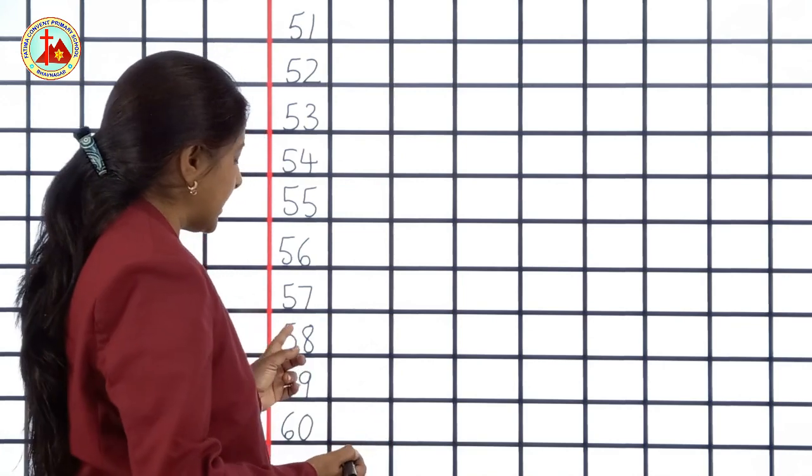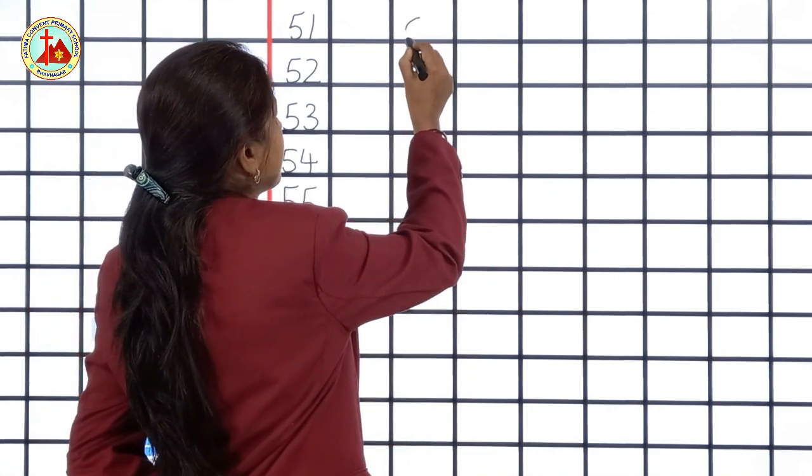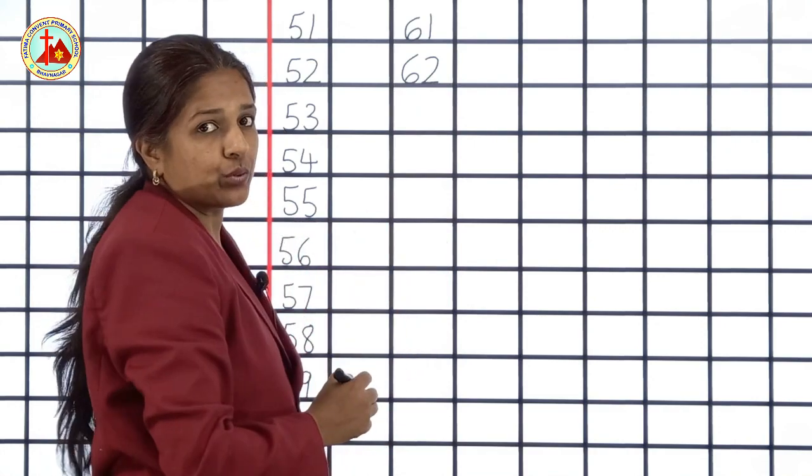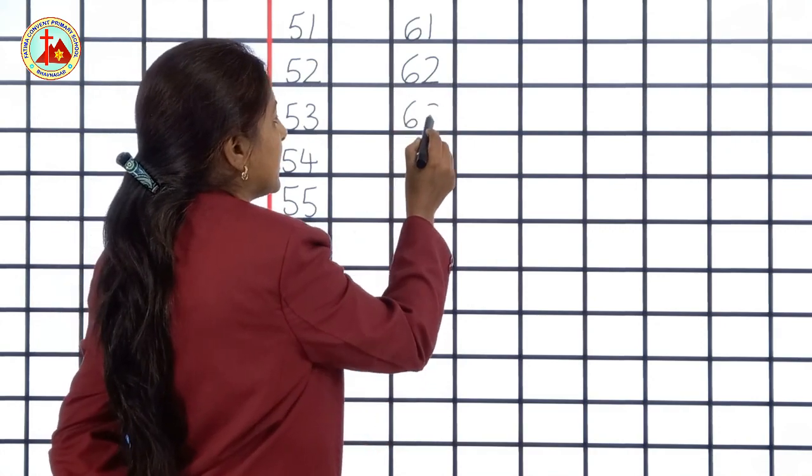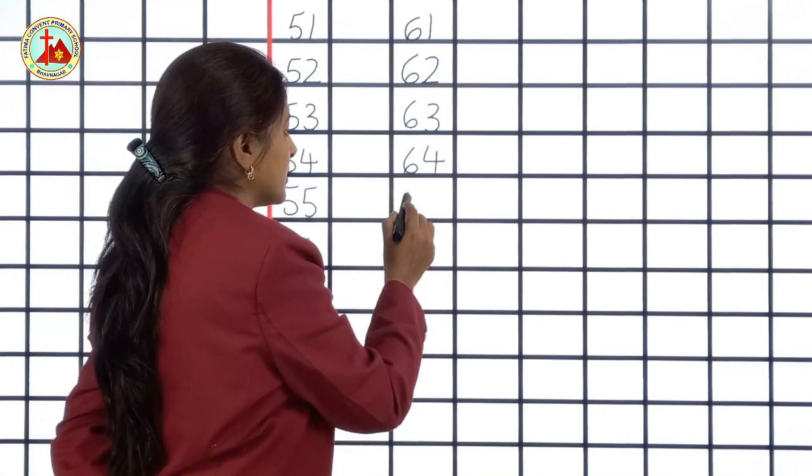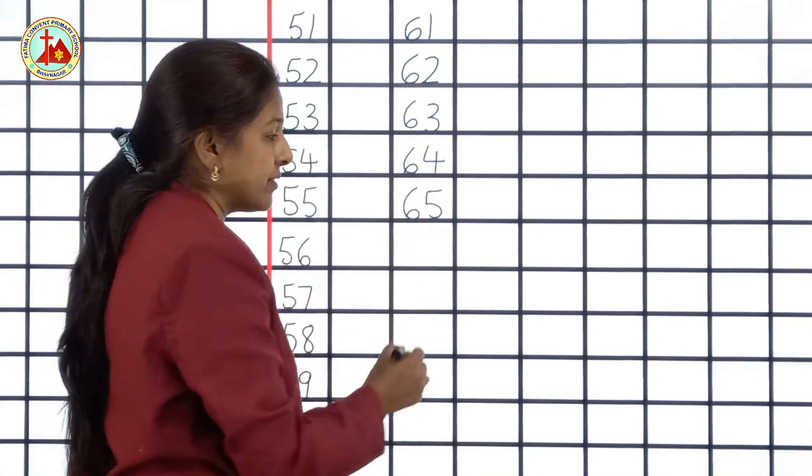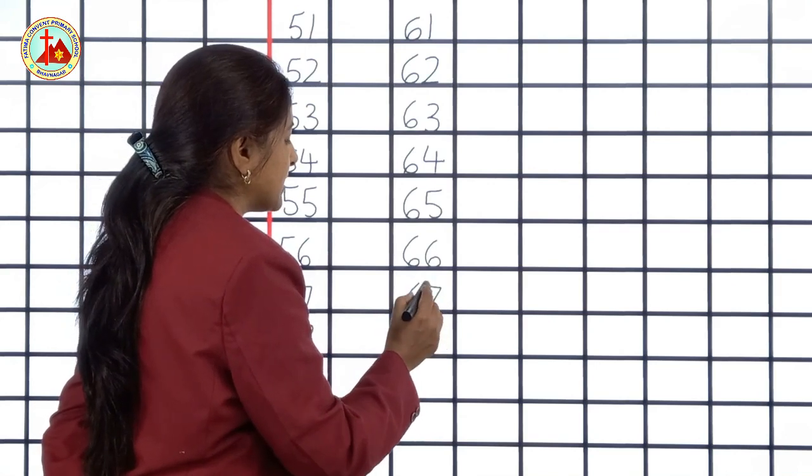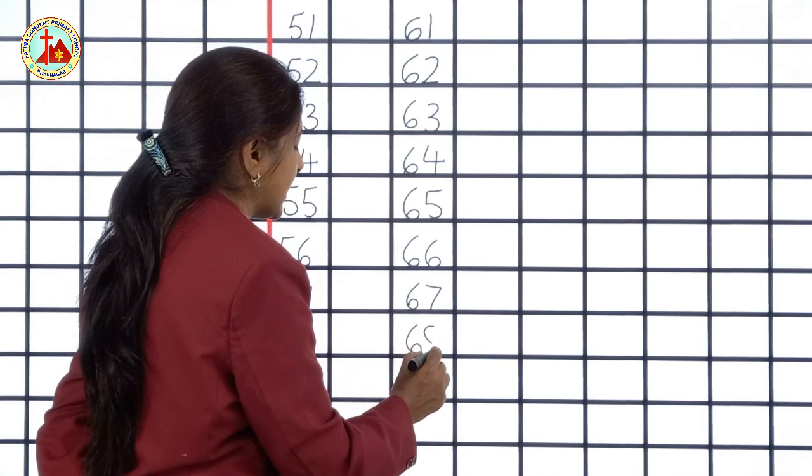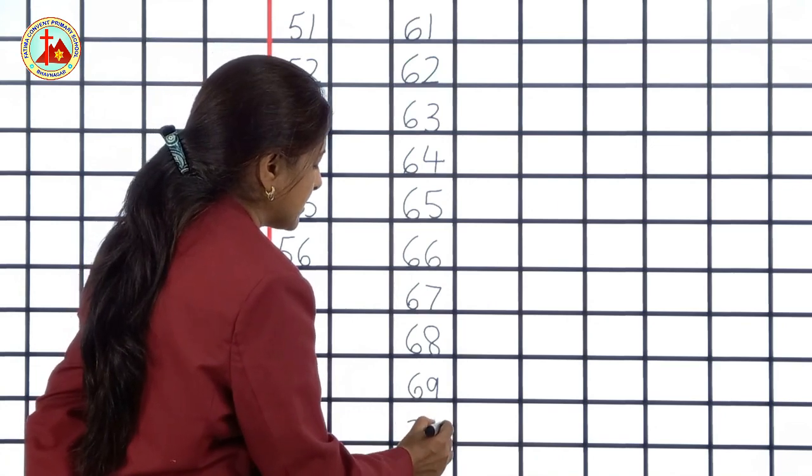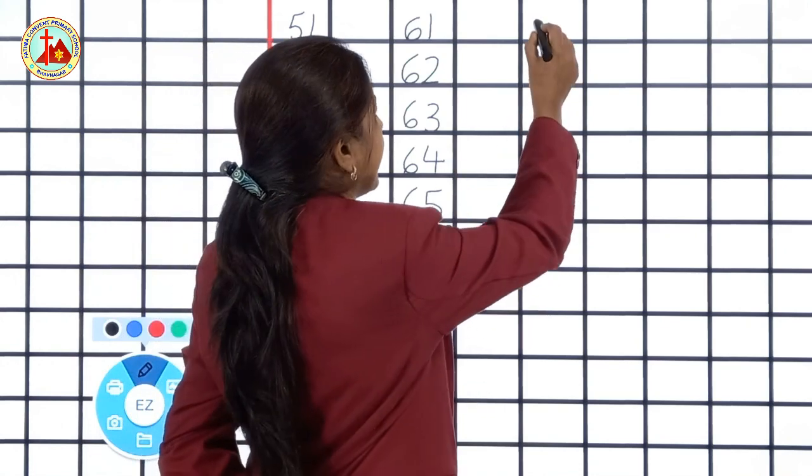58, 59, 60 then leave 1 line and write from the next line. 61, 62, 63, 64, 65, 66, 67, 68, 69 and 70.